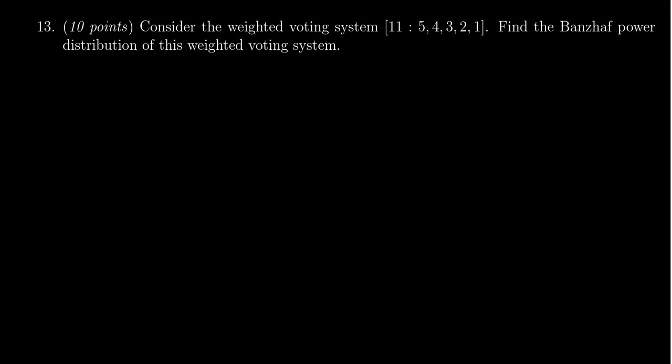In this video, we provide the solution to question number 13 for practice exam 3 for Math 1030, in which case, given the weighted voting system with a quota of 11 and 5 players whose weights are respectively 5, 4, 3, 2, 1, we need to find the Banzhaf power distribution for this weighted voting system.